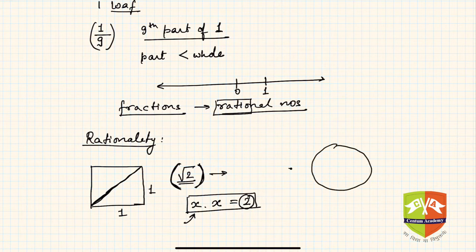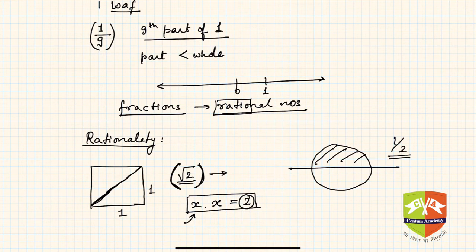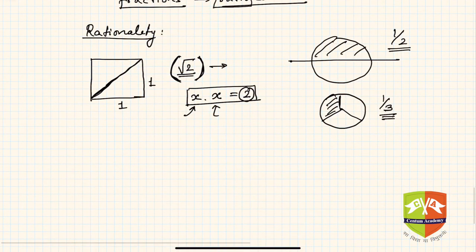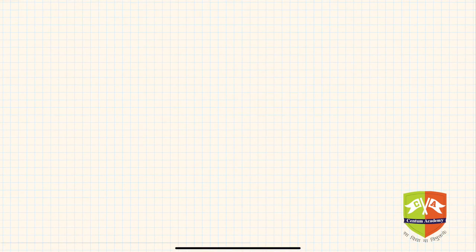Everything else that could be justified was coined as rational. For example, a loaf of bread divided into 2 parts gives one-half, written as 1 upon 2 — this is reasonable and makes sense. A bread divided into 3 parts gives 1 upon 3 — again reasonable. But root 2 was unreasonable at that point, hence those numbers were called irrational.